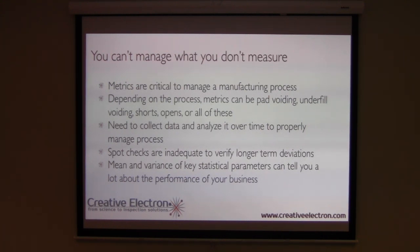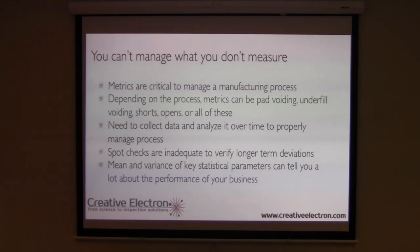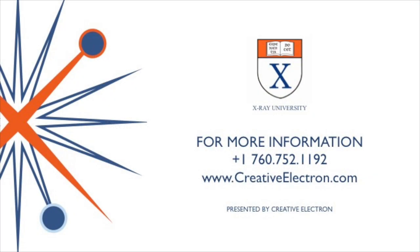Mean and variance tell you not only how your process is performing, but also how your business is performing — because failures in the field result in RMAs that will deeply impact your bottom line. For more information, please contact us at 760-752-1192 or find us online at creativeelectron.com. Thanks.